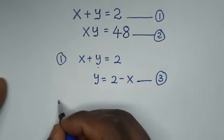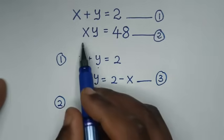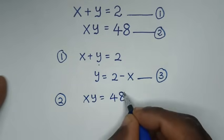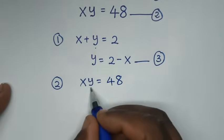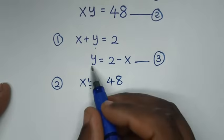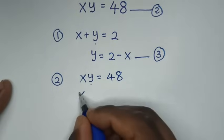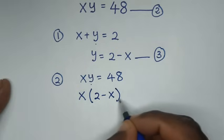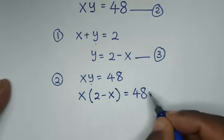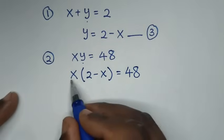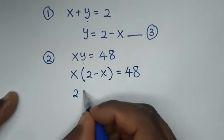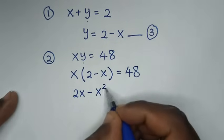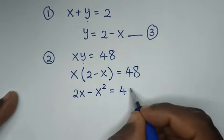Now we deal with equation 2, which is x times y equals 48. We substitute equation 3 into y, where y is 2 minus x. So it becomes x times (2 minus x) equals 48. Expanding: x times 2 is 2x, and x times negative x is negative x squared, so we have 2x minus x squared equals 48.